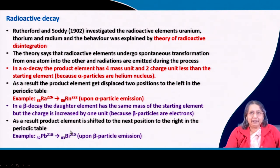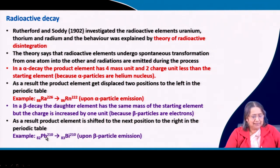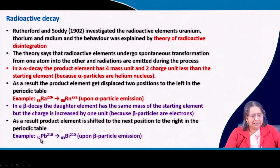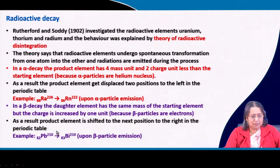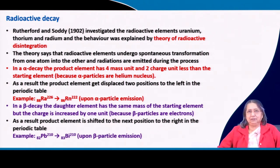One negative unit less means one positive unit more. The example here is lead as the parent element, with atomic mass 210 and atomic number 82. When one beta particle is emitted, the atomic number becomes 83 while the mass remains the same at 210, because the electron has no mass. So the daughter element bismuth has an atomic number 1 unit higher and its position in the periodic table shifts 1 unit to the right.